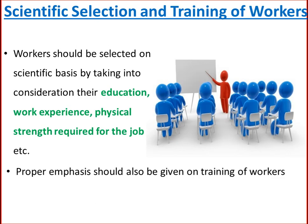The fifth element of scientific management is scientific selection and training of workers. Taylor suggested that workers should be selected on a scientific basis, taking into account their education, work experience, and physical strength required for the job. A worker should be given the work for which he is physically and technically most suitable, and proper emphasis should also be given on training of workers.